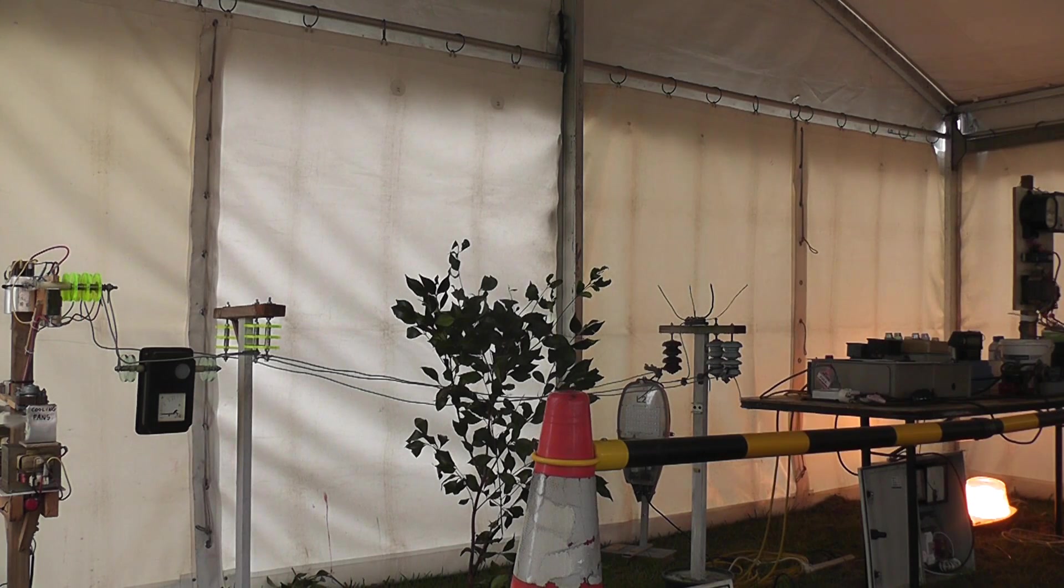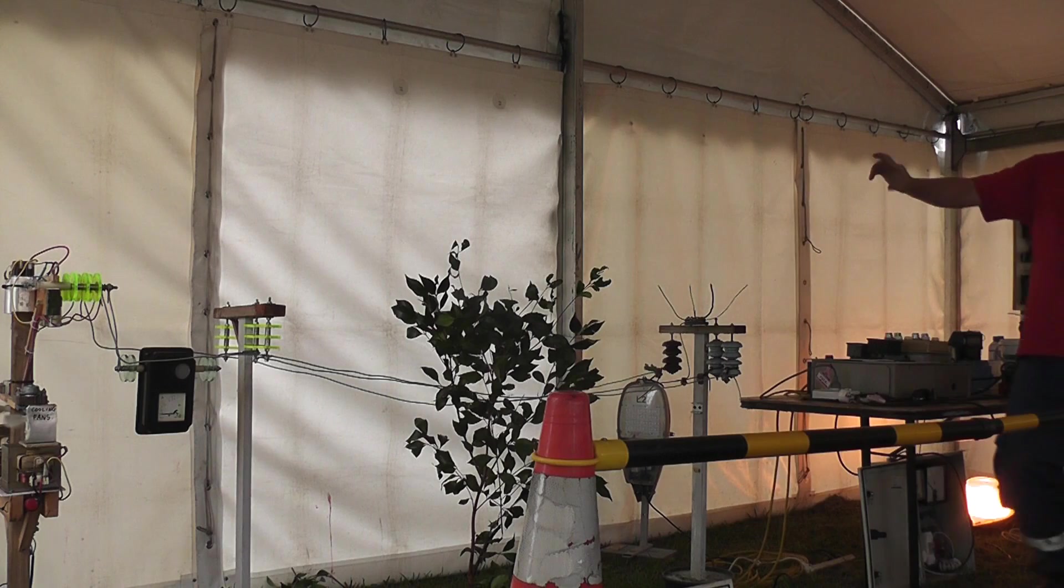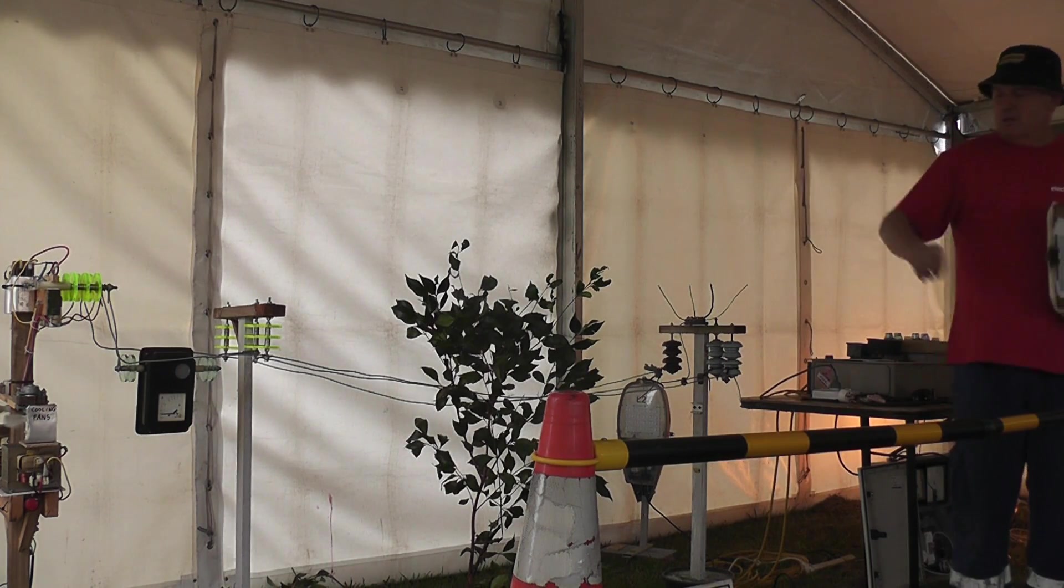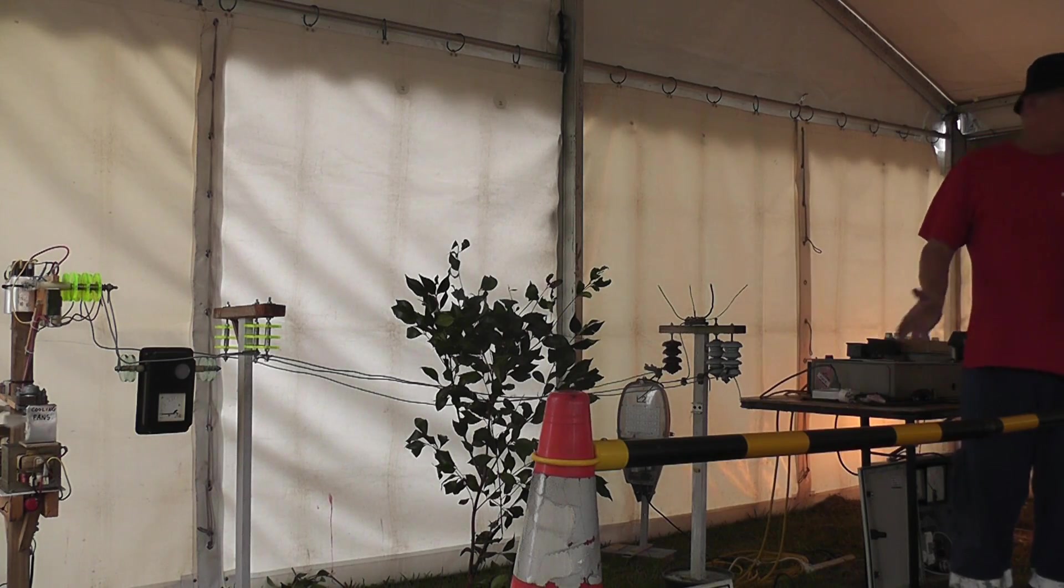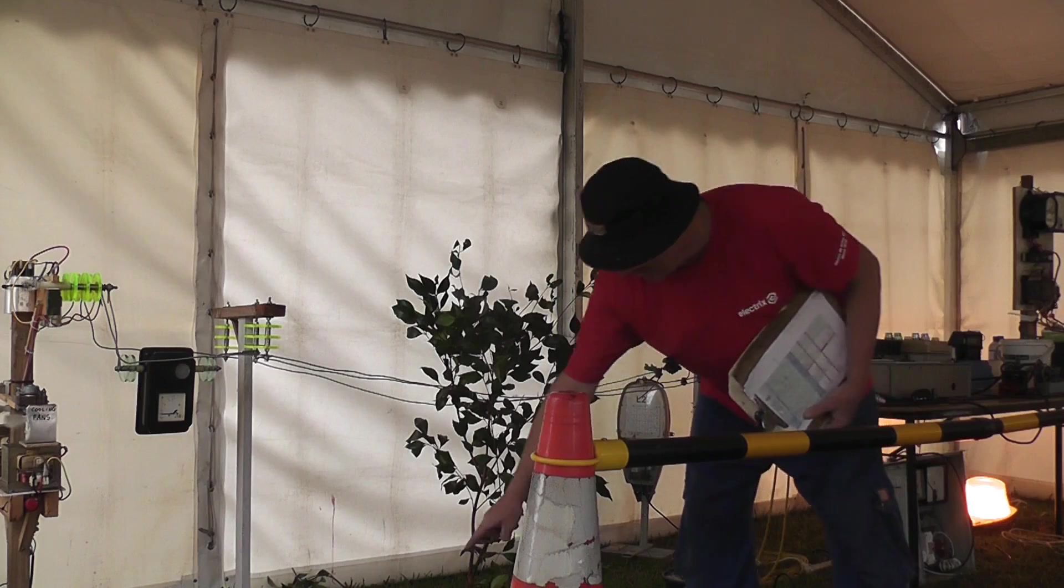I can stand here and we use 4.4 kV and 2.2 kV which I created by means of two microwave oven transformers from the pole. There's no step potential in the ground, hence we don't sit on rubber mat, so we don't have to be in the boots because the only step potential I create here is at the sole.